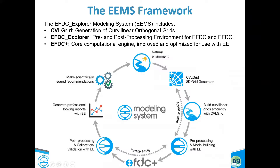Once you have the domain, you build the grid. You might go ahead and generate a simple depth-averaged condition so you can test the model performance, behavior, and timing. This is often an iterative process. You start with the domain, build and refine the grid — coursening or refining as needed — until you get an optimized grid resolution that is also computationally efficient for your application.